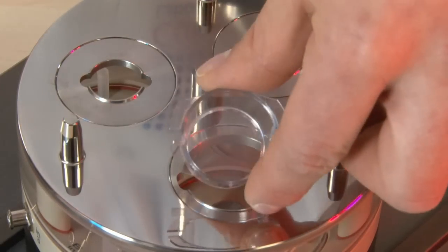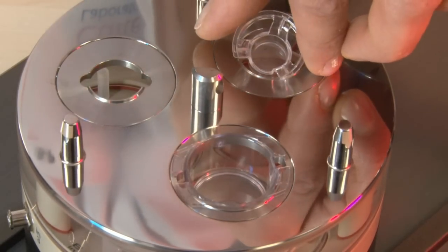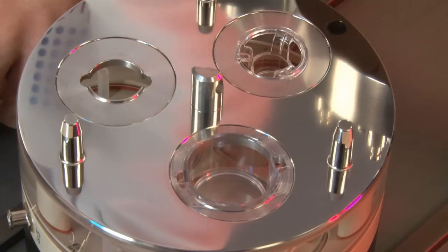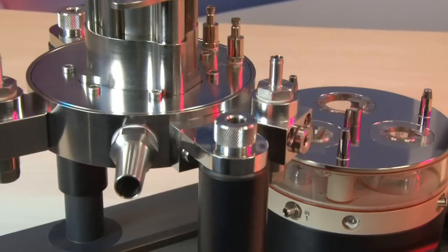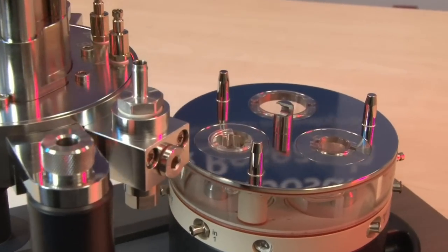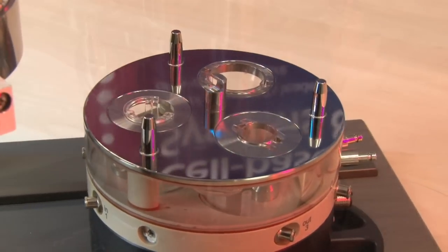For this, the Cooltex RFS features three sample positions for all current transwell inserts or petri dishes in various sizes. You can examine monolayer cultures, tissue samples, and even three-dimensional tissue constructs.